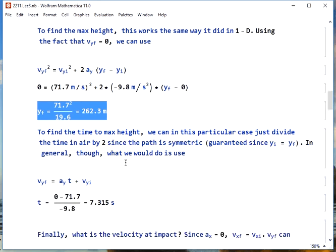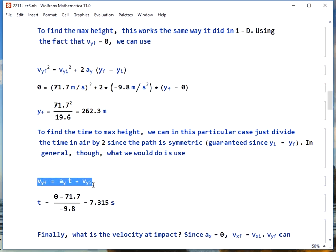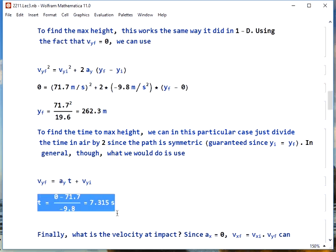To find the time to max height, there's a couple of ways we could do it in this case. We could just divide the time in air by two because we have a symmetric path. It's fired from the same height at which it lands. What's a little bit more general, though, is to use this kinematic equation and say, okay, Vy final is zero, Vy initial is what we found before, 71.7 meters per second. We know Ay. We solve for t. We get 7.32 seconds.